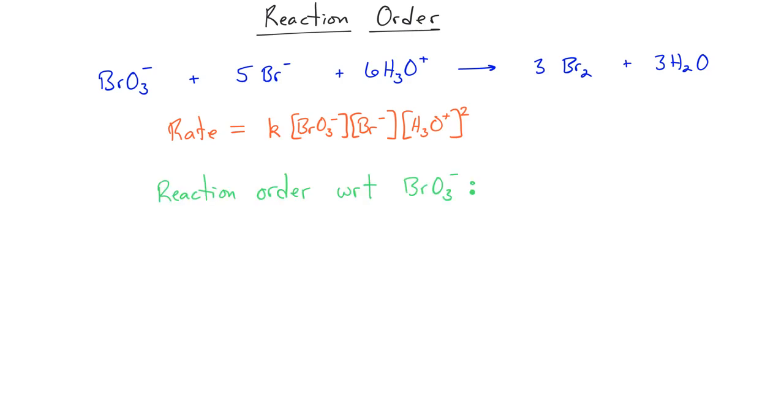So the reaction order with respect to BrO3 minus is going to be given by the exponent that goes with BrO3 minus in the rate law. So in this case, we can see that it is a 1, and so the reaction order with respect to the bromate ion is 1.